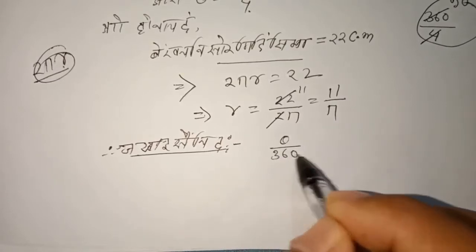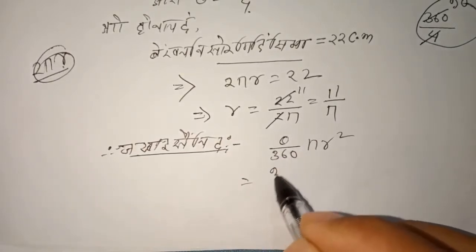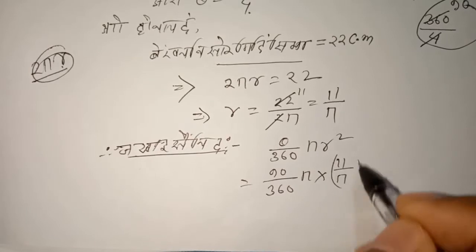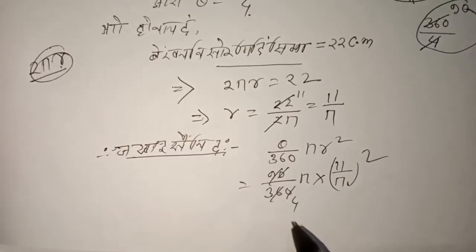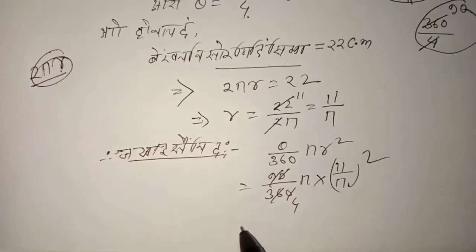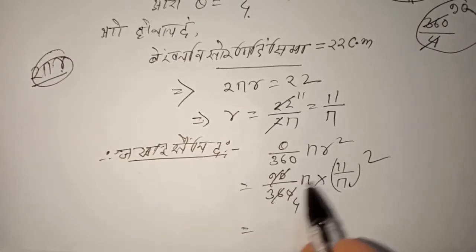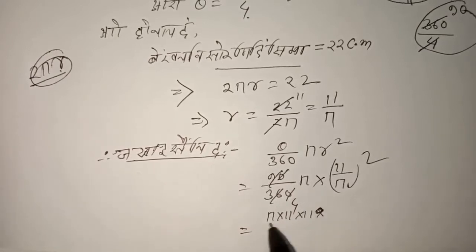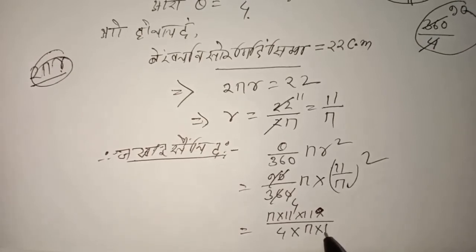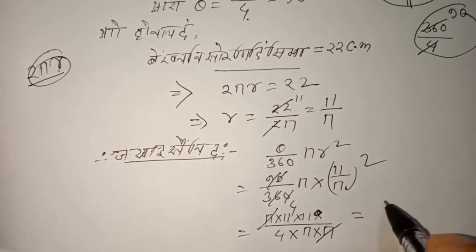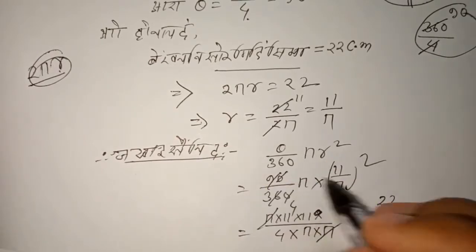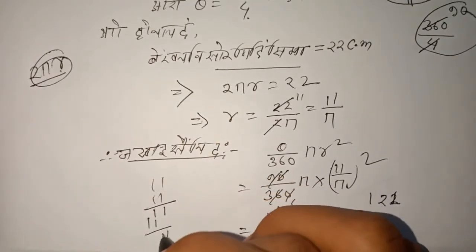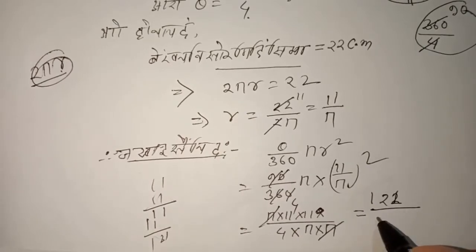Now applying the area of sector formula: theta by 360 times pi times r squared. Theta by 360, pi into r — r is 11 divided by pi — so that is pi into 11 by pi, whole squared. This gives pi into 11 into 11 divided by pi squared, then times 4.